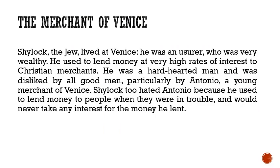The story begins like this. There was a Jew named Shylock who lived at Venice. He was a usurer — a person who lends money at a very high rate of interest. He used to lend money to Christian merchants at very high rates of interest. He was a very hard-hearted man, disliked by all good men, particularly Antonio.